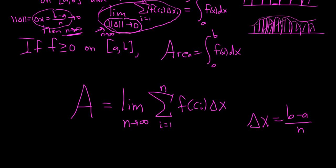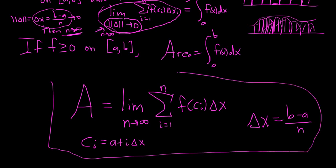And c sub i, well, before it was any number in the interval, so we force it to be a plus i delta x, so we can actually compute it, this is the right end point, so this is the formula we use to find area, so definitely not going to do an example in this video, because they take like 10 minutes, they're really long, you have to work through all of this, but I hope this video was helpful, and yeah, that's it.